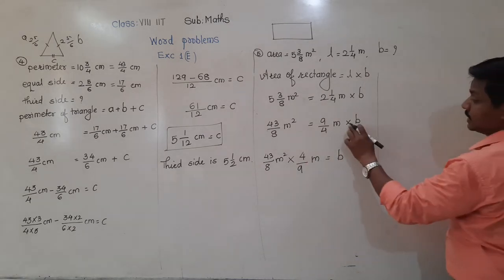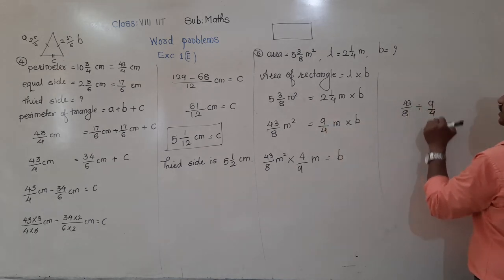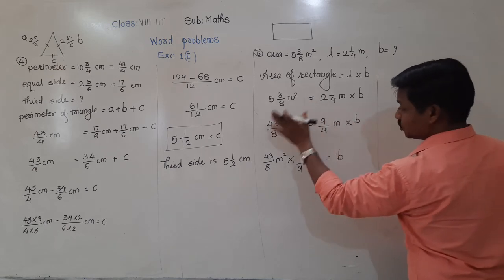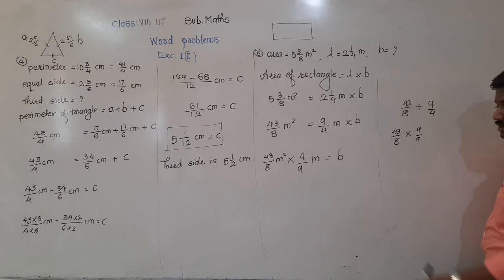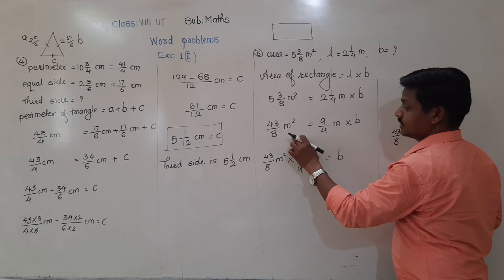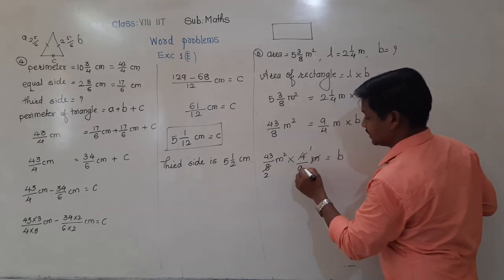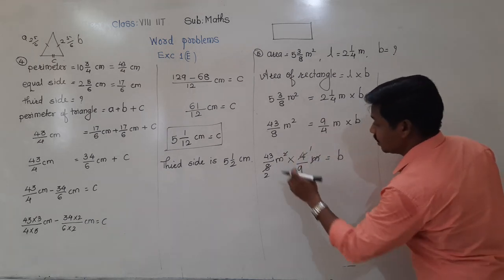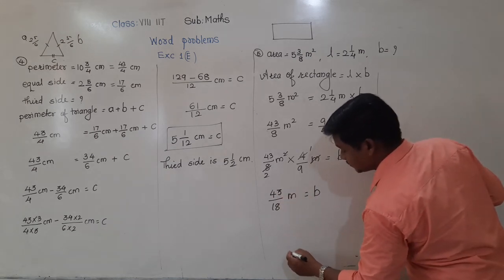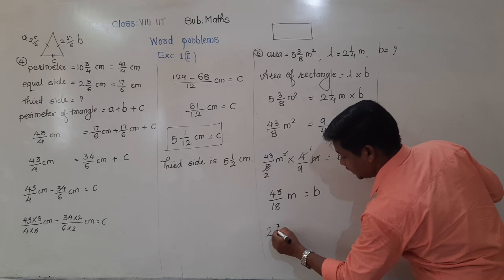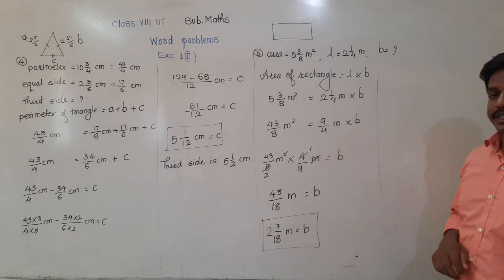When 9 upon 4 moves to the left side, the numerator 9 goes to the denominator and denominator 4 comes to the numerator, with the multiplication sign remaining as is. So B equals 43 times 4 upon 8 times 9. Simplifying: 4 twos are 8, so 43 upon 18. Converting to mixed fraction: 18 twos are 36, remainder 7 — so 2 and 7 upon 18 metres. The breadth of the rectangular tabletop is 2 integer 7 upon 18 metres.